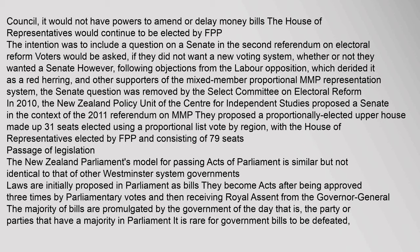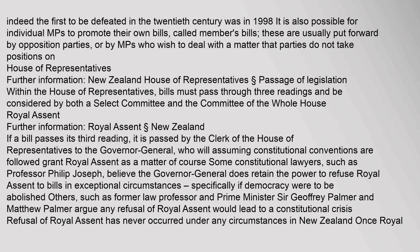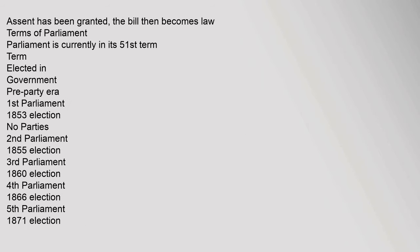Passage of Legislation: The New Zealand Parliament's model for passing acts of Parliament is similar but not identical to that of other Westminster system governments. Laws are initially proposed in Parliament as bills; they become acts after being approved three times by parliamentary votes and then receiving royal assent from the Governor-General. The majority of bills are promulgated by the government of the day, that is, the party or parties that have a majority in Parliament. It is rare for government bills to be defeated — indeed, the first to be defeated in the 20th century was in 1998. It is also possible for individual MPs to promote their own bills, called members' bills; these are usually put forward by opposition parties, or by MPs who wish to deal with a matter that parties do not take positions on. Once assent has been granted, the bill then becomes law.